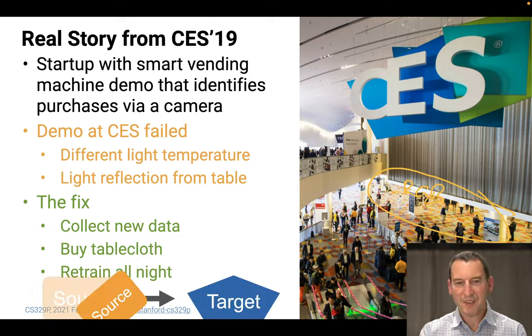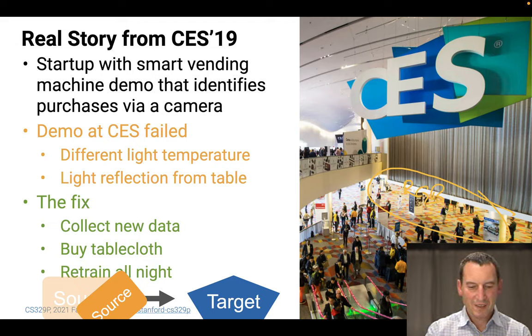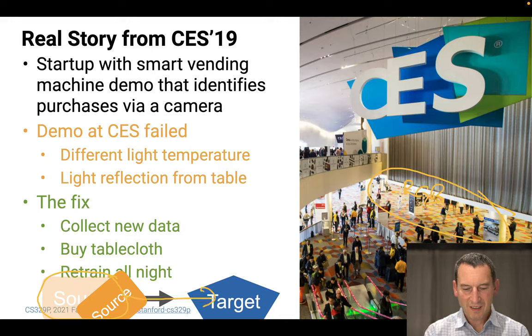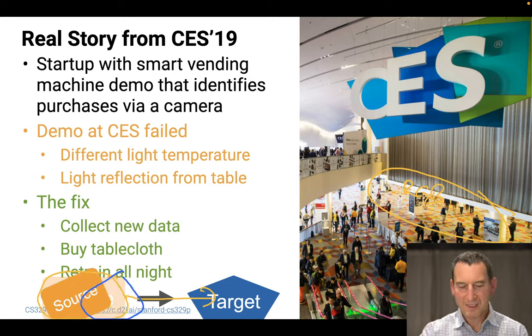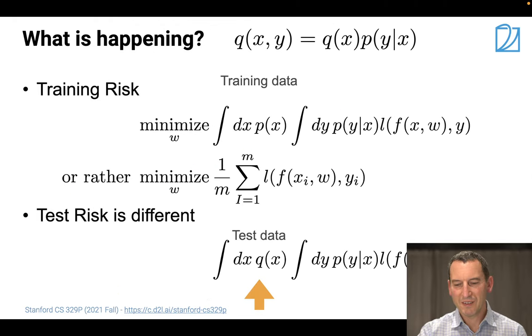So what's really happened is if this is the original source, and I want to go from the source to the target, then the CES source was like so. And so what they tried, therefore, then is to try and see whether they can move it in a way such that the updated source is closer to the original.